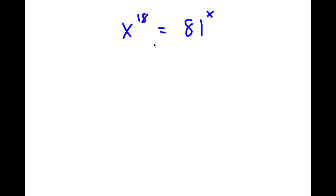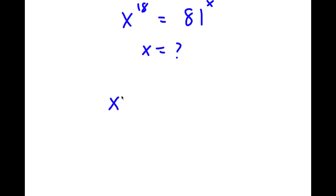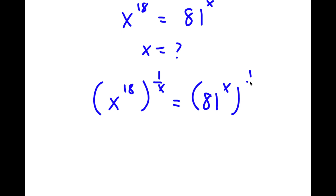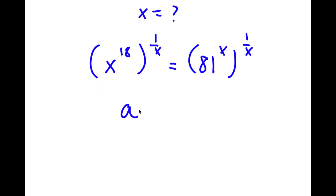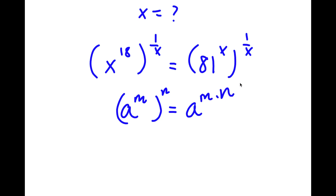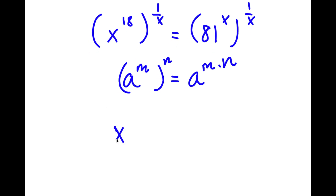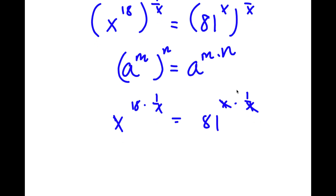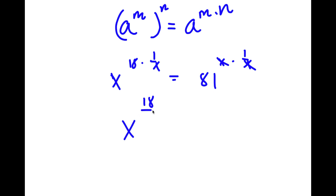In this problem, I have x to the power of 18 is equal to 81 to the power of x, and I want to find the value of x. To start, I'm going to take the power of 1 over x on both sides. Using the rule that A to the power of M to the power of N equals A to the power of M times N, this gives x to the power of 18 over x is equal to 81.